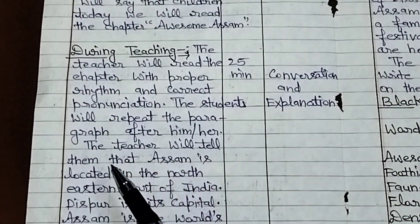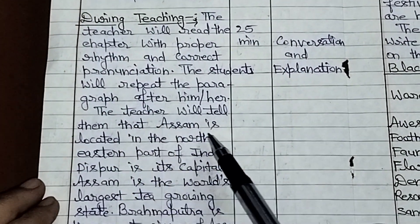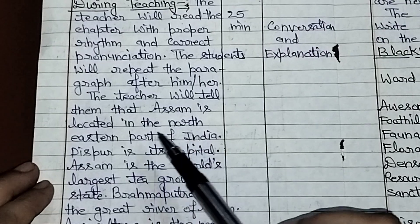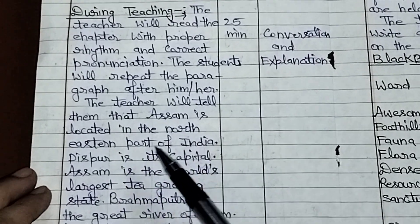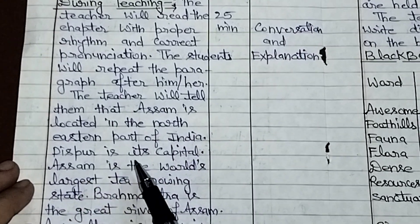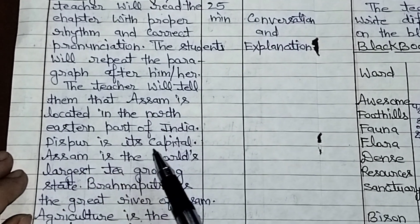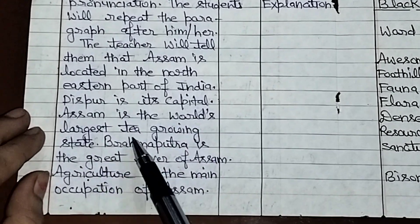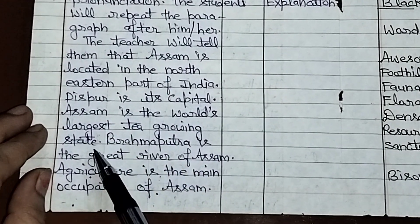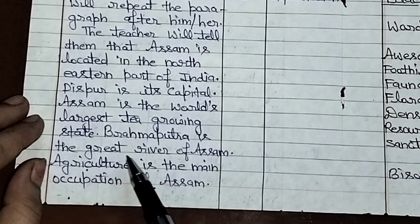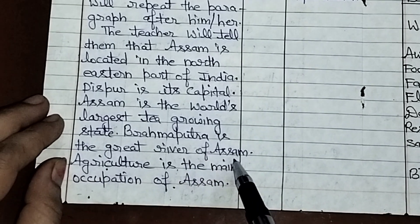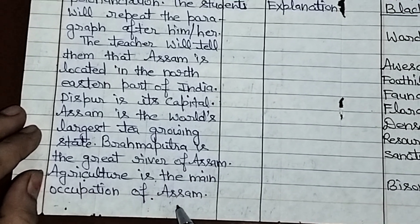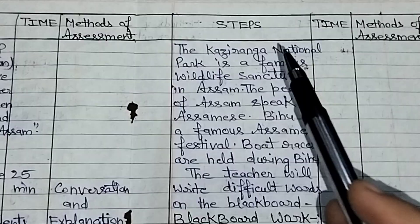The teacher will tell them that Assam is located in the north-eastern part of India. Dispur is its capital. Assam is the world's largest tea-growing state. The Brahmaputra is the great river of Assam. Agriculture is the main occupation of Assam.